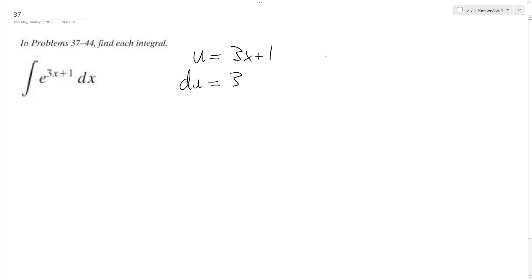So that means DX is equal to 1 third DU, so we multiply both sides by 3. So DU is equal to 3DX.